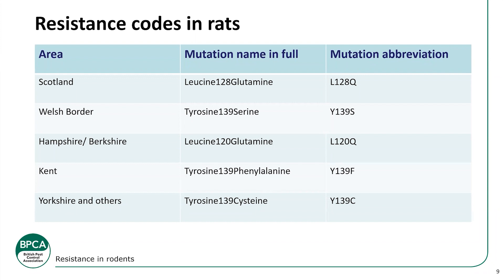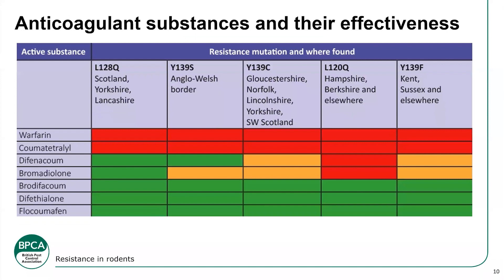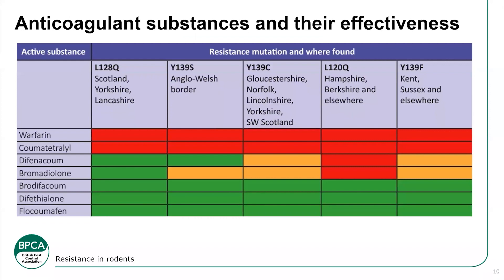Where each strain was first found is where it was given its name — Scotland, Hampshire, Wales, Yorkshire, Kent. However, these strains are now being found in more areas. The Hampshire strain has actually been found as far north as Scotland. It's thought this spread occurs as populations meet and there is breeding between parents that carry different mutations.